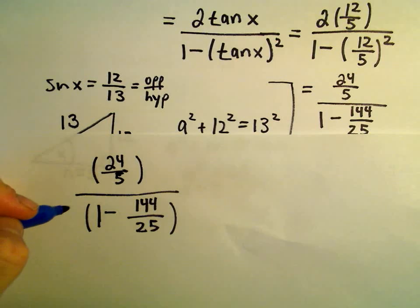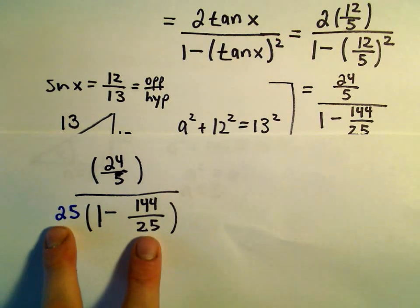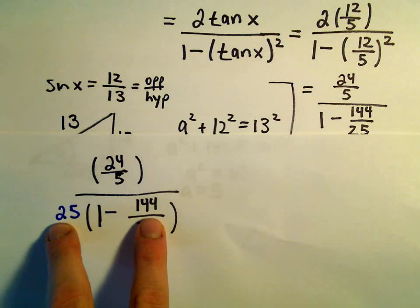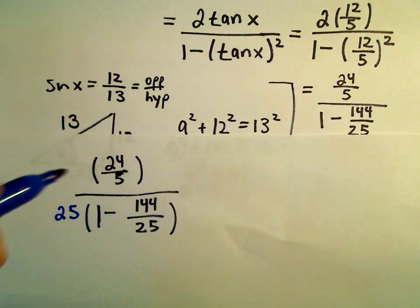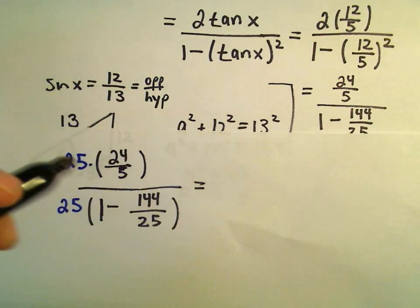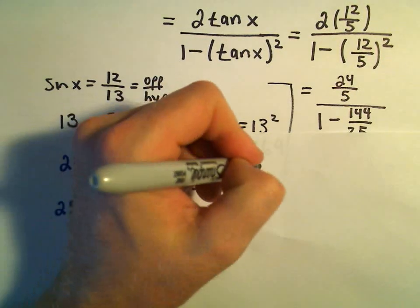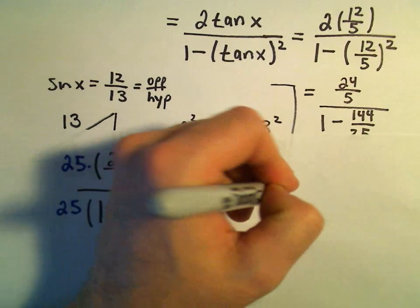So in the denominator, if I just multiply by 25, it would basically cancel out the fraction in my second term. But if I do it to the top, I've got to do it to the bottom. So 25 divided by 5 is simply going to be 5, so we'll have 5 times 24 in the numerator.